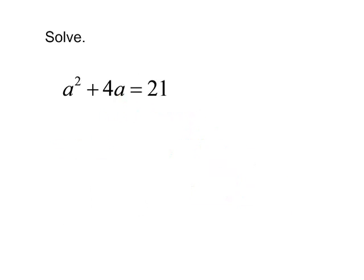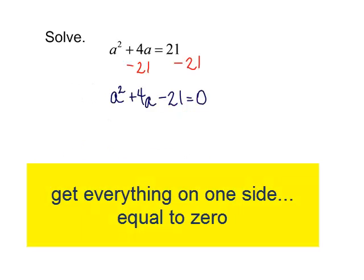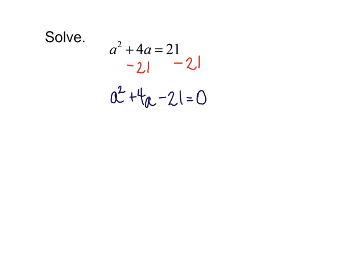Let's try another one. Solve a squared plus 4a equals 21. Notice the a squared. We do have a quadratic equation. Let's get everything on one side. I will subtract 21 from both sides. I will now have a squared plus 4a minus 21 equals 0.